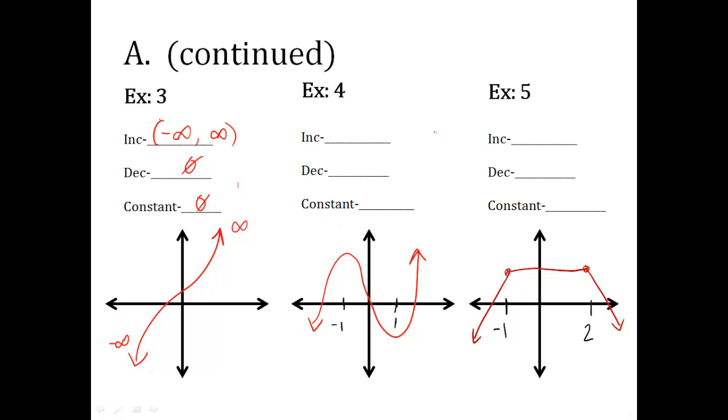Look at example four. Increasing, decreasing and constant. Look at this. This is sectioned off. If I section from here, this is increasing. Then from here down, this is a decreasing section. And then it increases again. So I have to show these intervals.